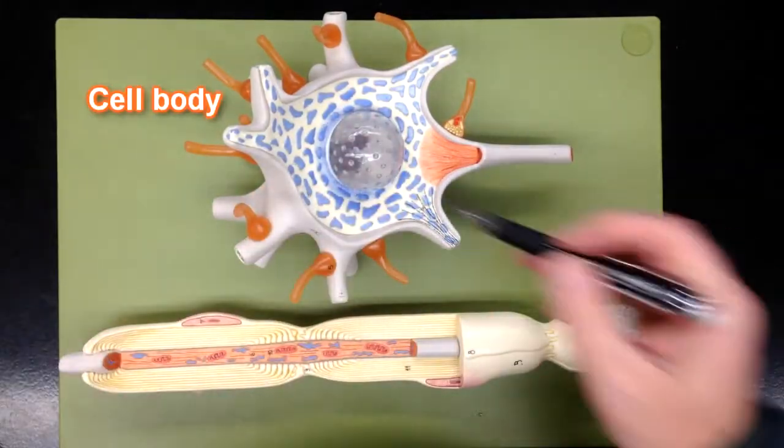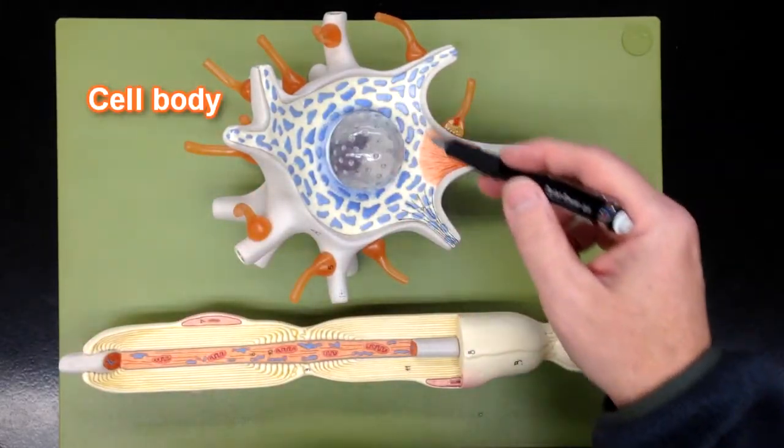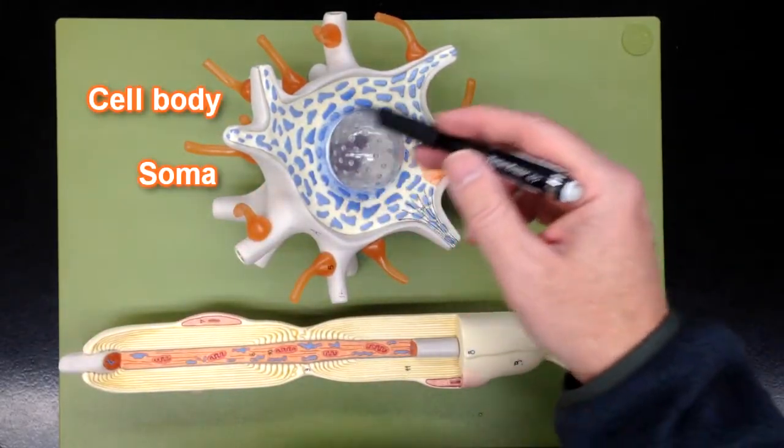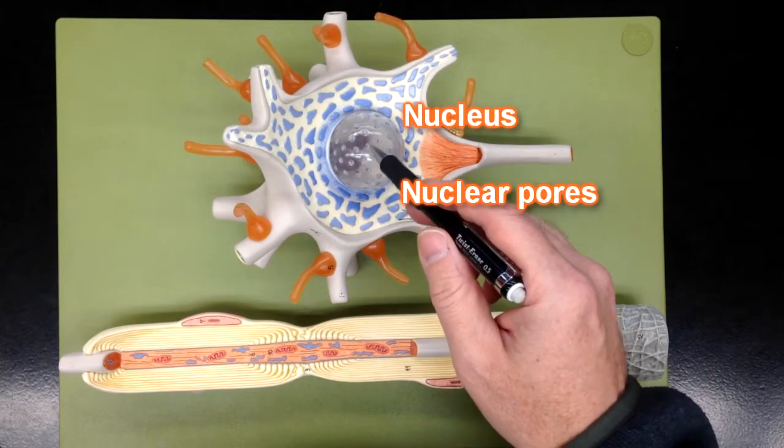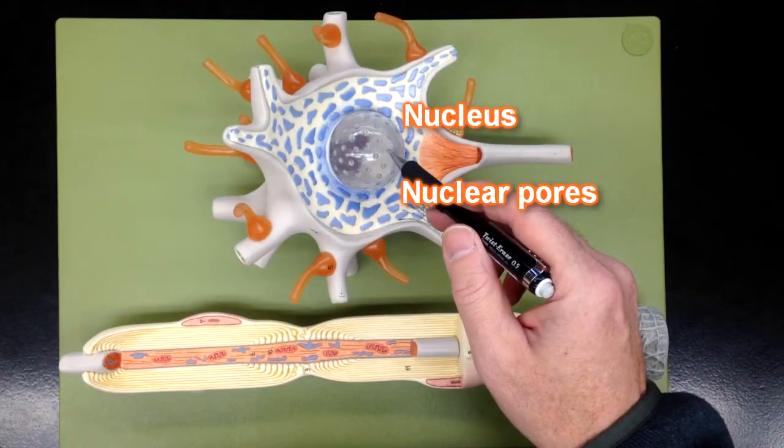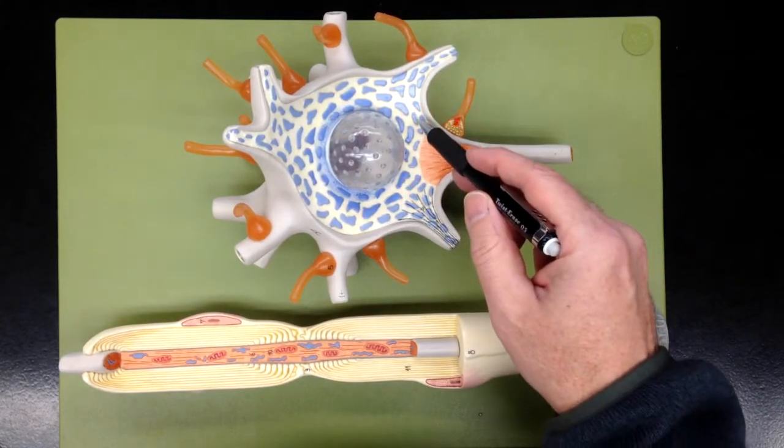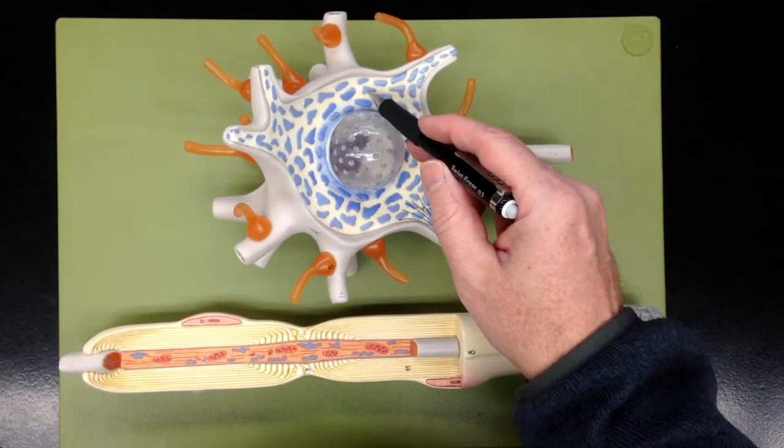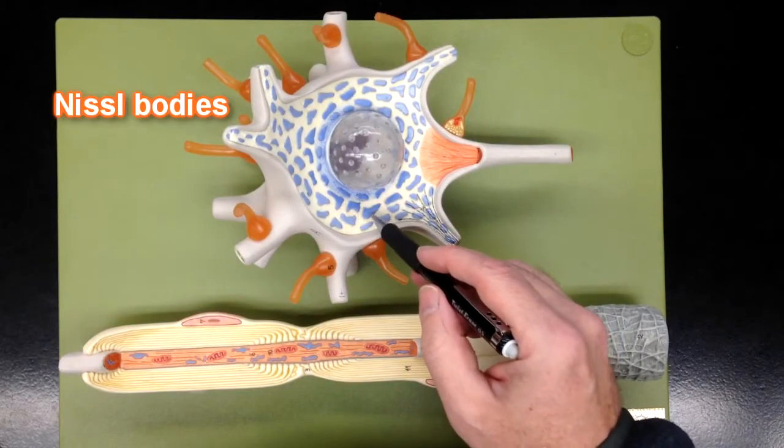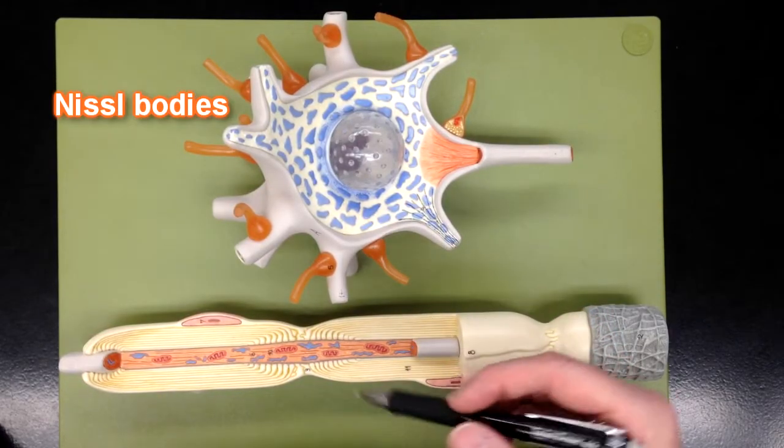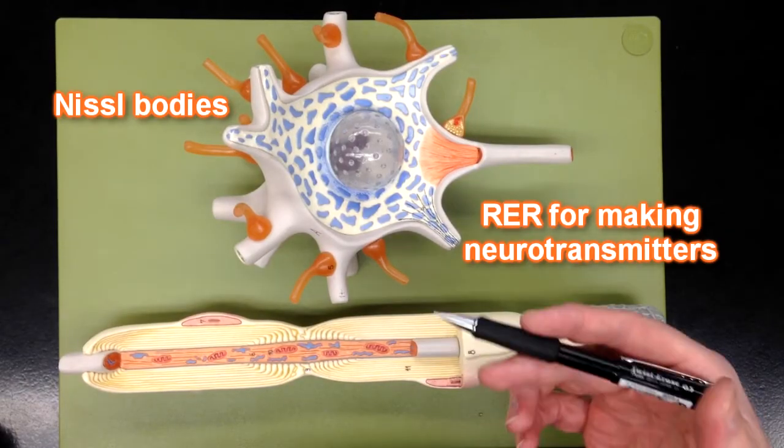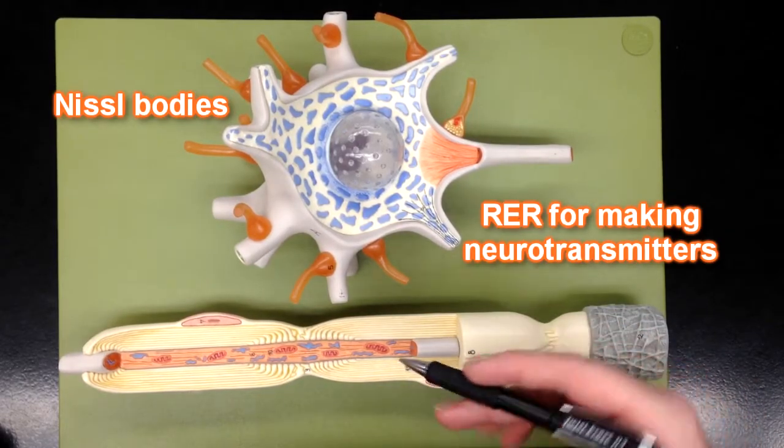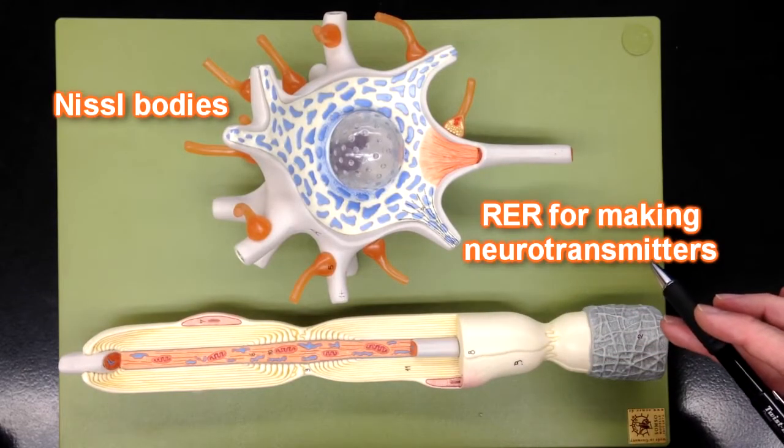Starting with the cell body, also known as the soma, this is the main portion of the cell. Here you can see the nucleus with these nuclear pores. These blue dots are Nissel bodies, which are rough endoplasmic reticulum that make proteins that turn into neurotransmitters.